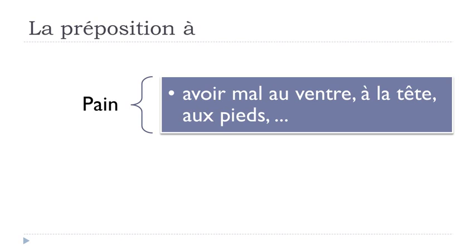There's also the expression for body aches: 'avoir mal à' — to have an ache somewhere in your body. You combine it with the article: 'avoir mal au ventre' (stomach ache — 'au' is À plus 'le', since 'ventre' is masculine), 'avoir mal à la tête' (headache — 'tête' is feminine), 'avoir mal au pied' (foot pain). So you always use avoir mal + À + the body part with its article.